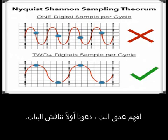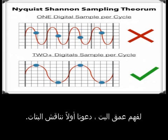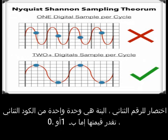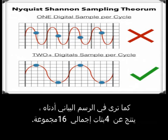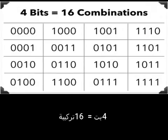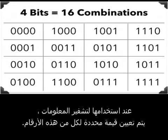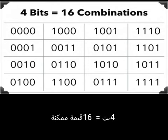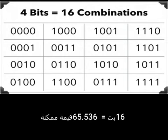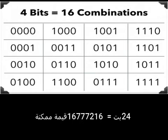Bit depth. To understand bit depth, let's first discuss bits. Short for binary digital, a bit is a single unit of binary code valued at either 1 or 0. The more bits used, the more combinations are possible. For example, 4 bits yields a total of 16 combinations. By increasing the bits, the number of possible values grows exponentially: 4 bits equals 16 possible values, 8 bits equals 256, 16 bits equals 65,536, and 24 bits equals 16,777,216 possible values.